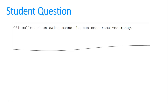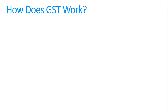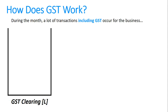GST collected on sales means the business receives money, so why is that not a revenue? To answer that we're going to look at how GST works. During the month a business has a lot of transactions which include GST, and we assume that money collected is a liability going into a big pot called GST clearing liability.